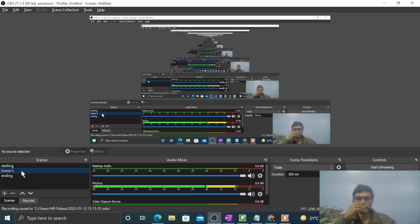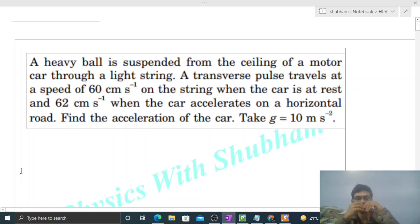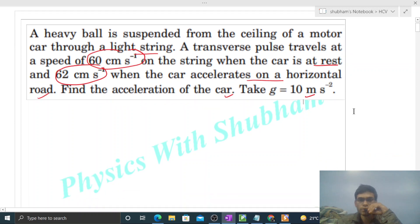Okay hi everyone, so today let's discuss one interesting problem. It says a heavy ball is suspended from the ceiling of a motor car through a light string. A transverse pulse travels at a speed of 60 centimeter per second on the string when the car is at rest and 62 centimeter per second when the car accelerates on a horizontal road. Find the acceleration of the car. Take g is equal to 10 meter per second square.